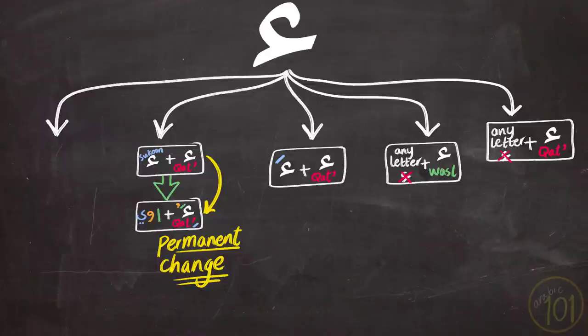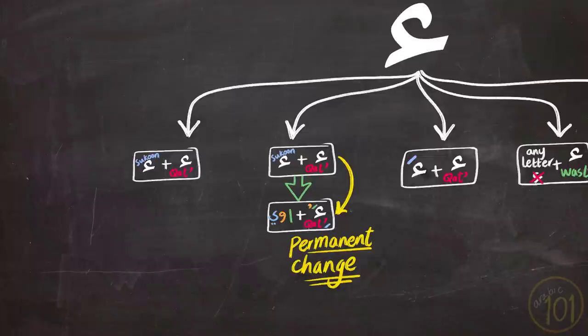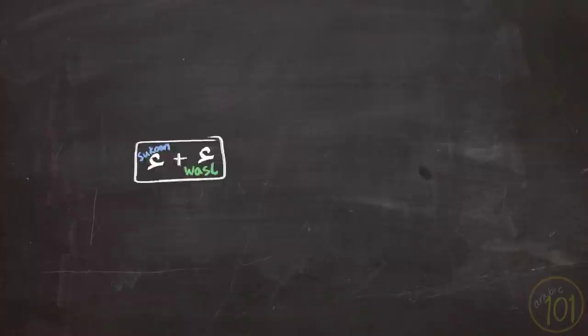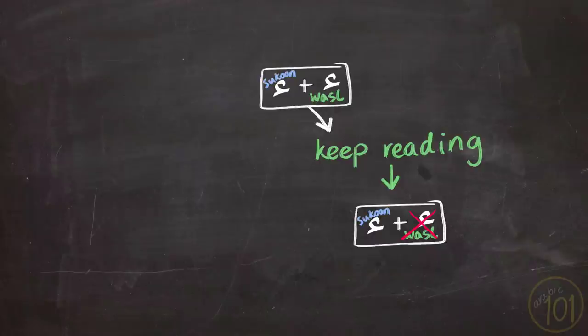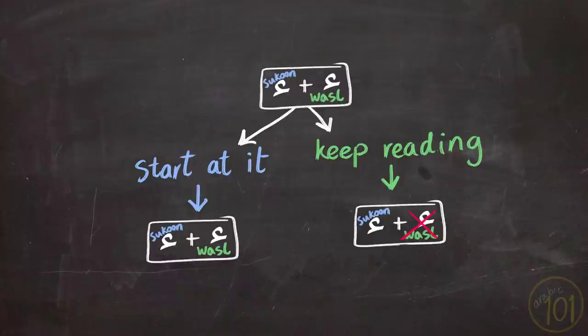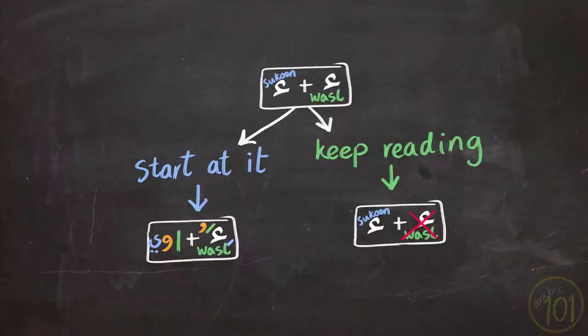Case number four is pretty straightforward and you shouldn't worry about it, since the changes that happen to the word are permanent. Hamza al-Qata', which we start with, is consistent whether you keep on reading or start at the word — it remains the same. Now, case number five is the exact same as case number four with one single difference: instead of Hamza al-Qata' at the beginning of the word, it has Hamza al-Wasl, and it is followed by another Hamza. If you keep on reading, Hamza al-Wasl will be dropped as usual, but if you start at the word, the second Hamza will turn into the long vowel of the same kind as the short vowel on top of the first Hamza.